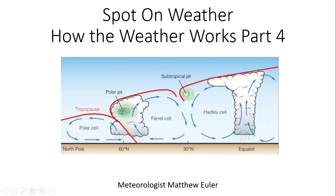The three cells are the Hadley, the Ferrel, and the polar, with upward vertical motion at the equator and at 60 degrees north latitude, and downward motion at 90 degrees north and at 30 degrees north latitude.